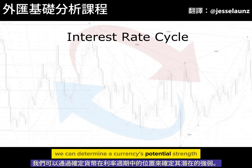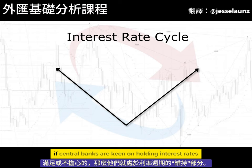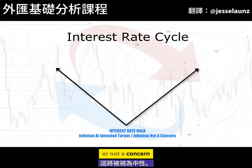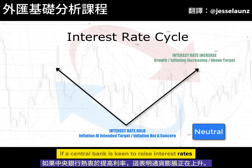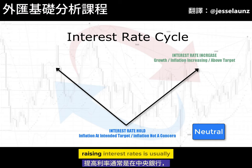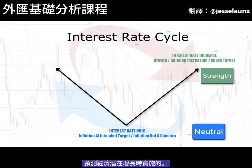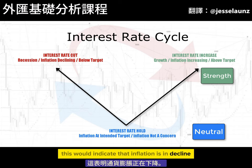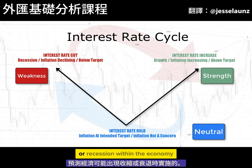We can determine a currency's potential strength or weakness by identifying where the currency is on the interest rate cycle. If central banks are keen on holding interest rates and their desired inflation target is met, they are in the hold section of the interest rate cycle — this would be considered neutral. If a central bank is keen to raise interest rates, this would indicate that inflation is increasing, and raising rates is usually applied when the central bank projects potential growth. If a central bank is focused on a cut, this would indicate that inflation is in decline, and cutting is usually applied when the bank projects potential contraction or recession.